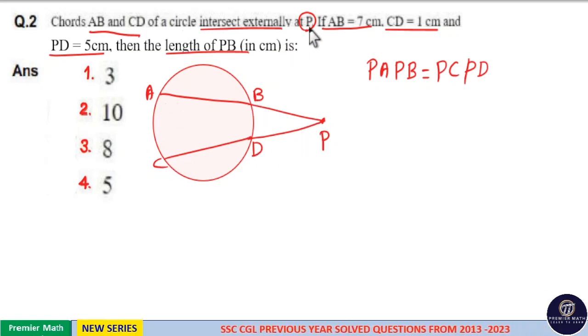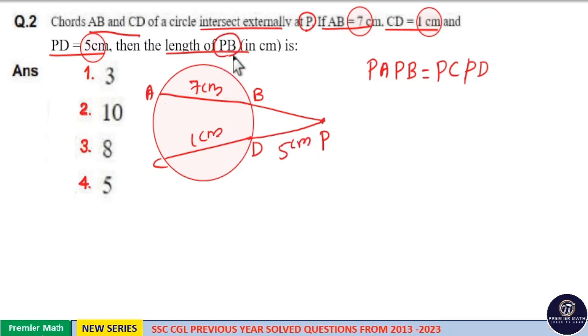Now, here, AB equal to 7 cm, and CD equal to 1 cm. PD equal to 5 cm. Now, we have to find the length of PB.